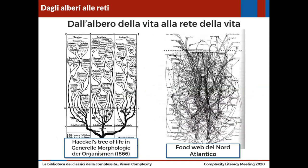Quindi ancora dall'albero della vita — sulla sinistra abbiamo un esempio di Tree of Life, cioè di albero della vita in cui c'è la suddivisione tra piante e tutti gli animali — alla rete della vita. Sulla destra è una rete prede-predatori, chi mangia chi, nel nord Atlantico, una pulse web.